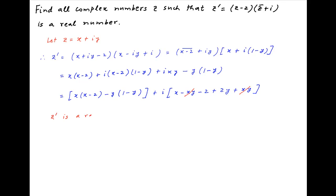Now z dash is a real number if the imaginary part of z dash is equal to 0. This implies that x minus 2 plus 2y must be equal to 0, which implies that x is equal to 2 minus 2y.